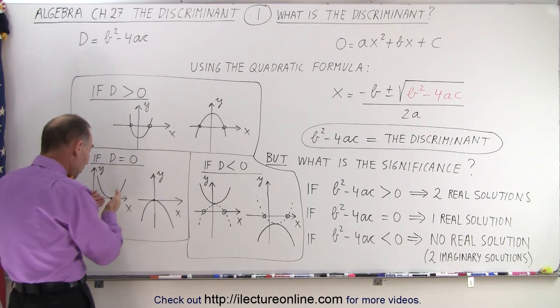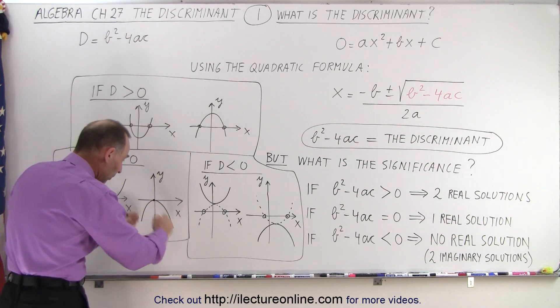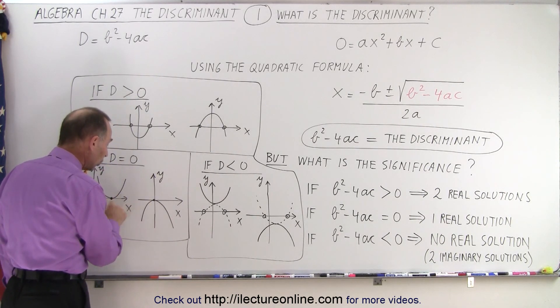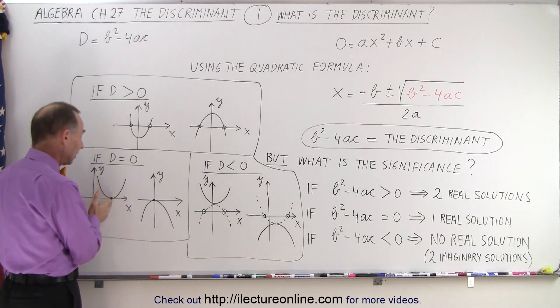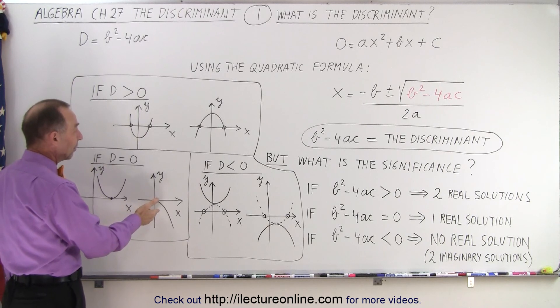Either the graph will open upward or the graph will open downward, but again it will only touch the x-axis in one place. So either the graph will look kind of like this or look kind of like that when there's only one solution when the discriminant is equal to zero.